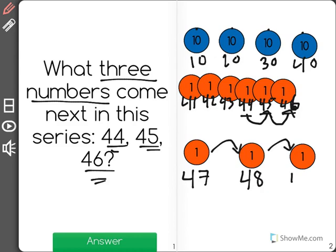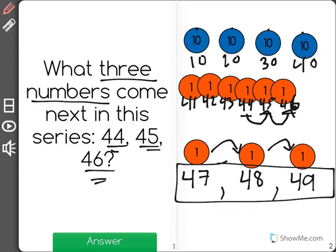And 1 more to get 49. These are the next three numbers in the series because they are adding by 1 after 46. 47, 48, 49.